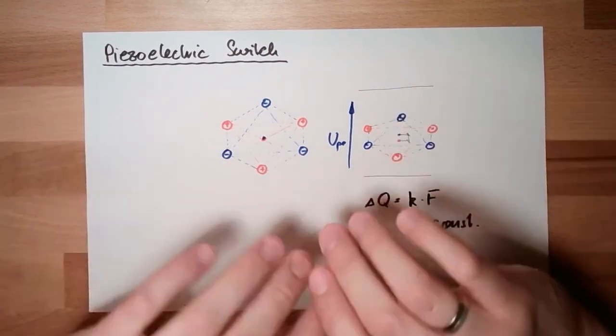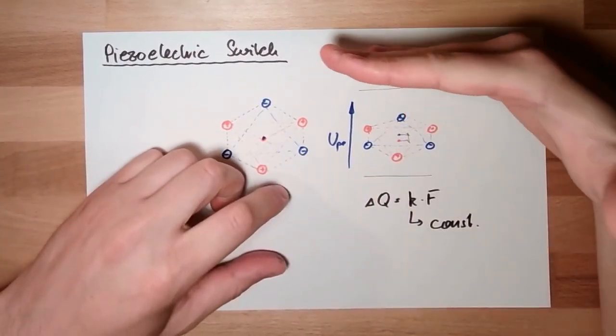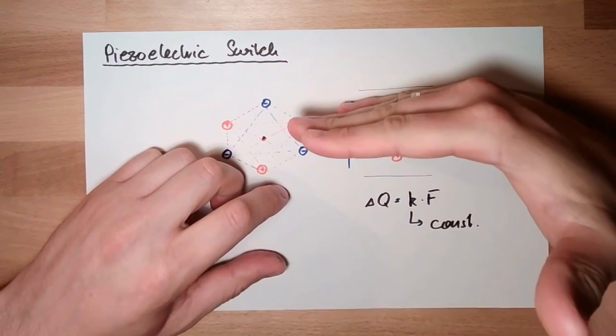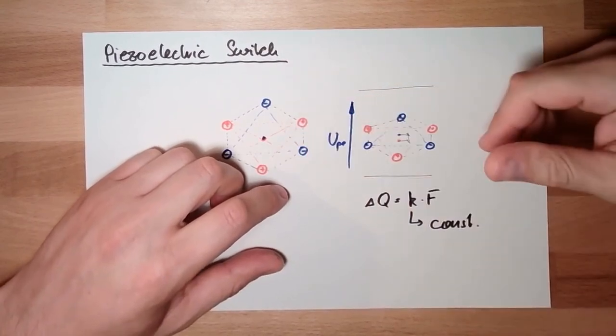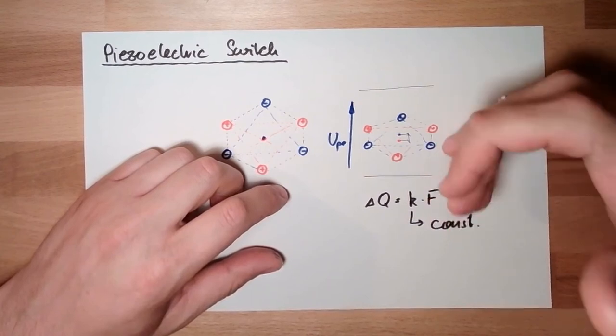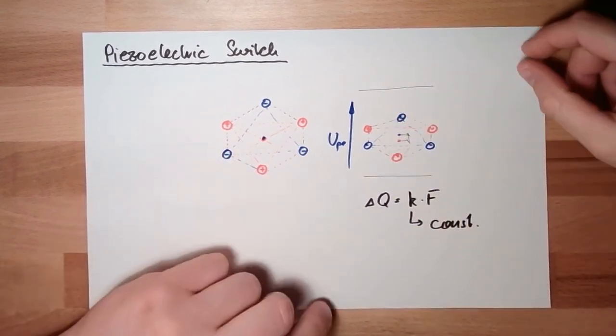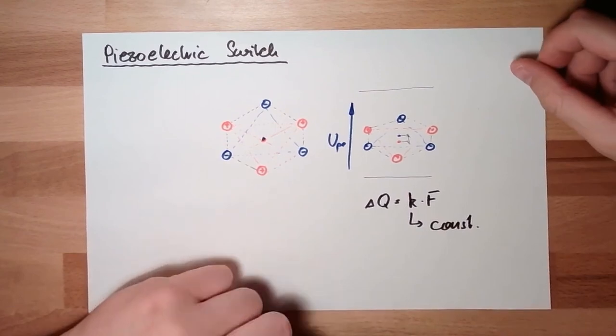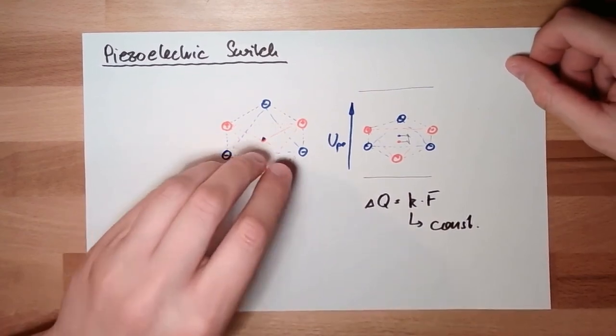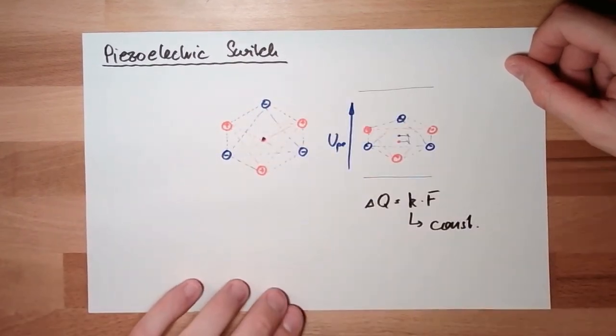So if I'm now having such piezoelectric material and something applies force to it, I can measure—there must be something on. There must be something on and I can switch. It's switching. Piezoelectric, then it's a piezoelectric switch using the piezoelectric effect.